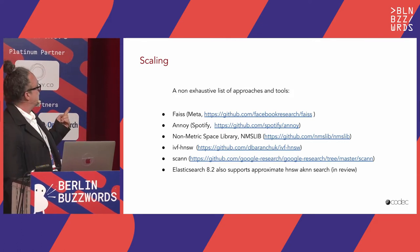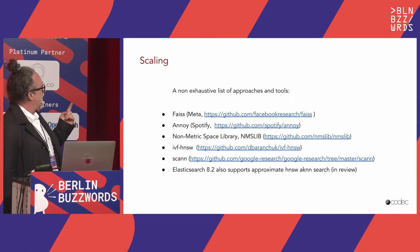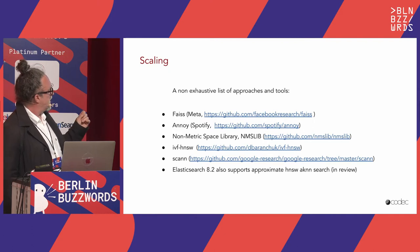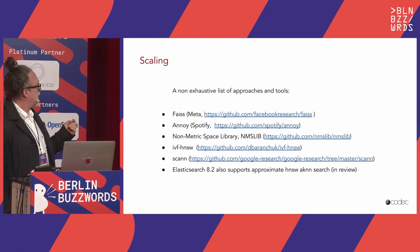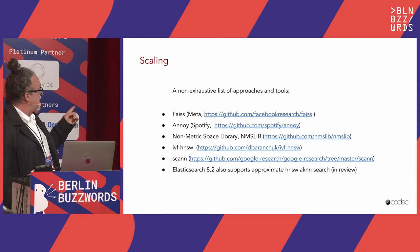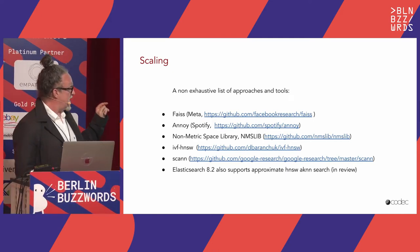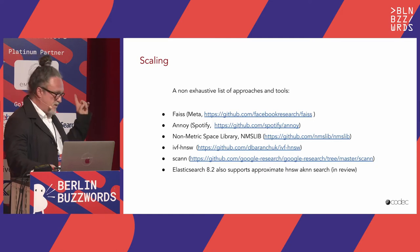Popular libraries include FAISS from Meta, which is one of the most popular; ANNOY from Spotify; NMSLIB (non-metric space library), which is also very useful. There's also AVF-HNSW — inverted indexes plus small-world graphs — and the SCANN library from Google, which is extremely fast. Elasticsearch 8.2 also supports approximate AKN search, but it is still in review.